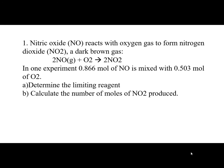So given the example, we have nitric oxide reacts with oxygen to form nitrogen dioxide, which is considered to be a dark brown gas. The equation is already balanced: 2 moles of nitric oxide reacts with 1 mole of oxygen gas to yield 2 moles of nitrogen dioxide. Now in one experiment, we have 0.866 moles of NO reacts with 0.503 moles of O₂. The question is: determine the limiting reagent and calculate the number of moles of NO₂ produced.